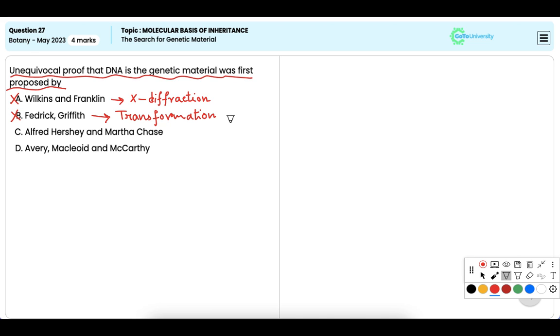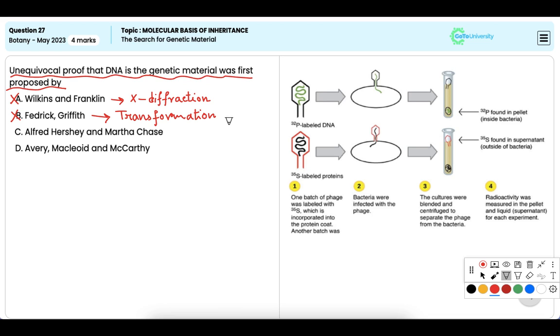Alfred Hershey and Martha Chase. The Hershey-Chase experiment in 1952 provided unequivocal proof that DNA is the genetic material.